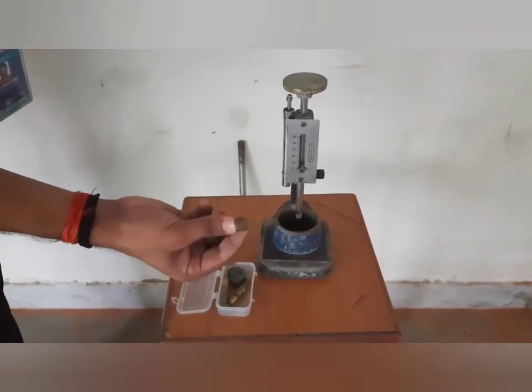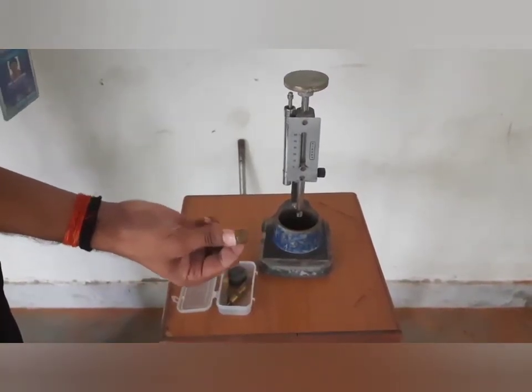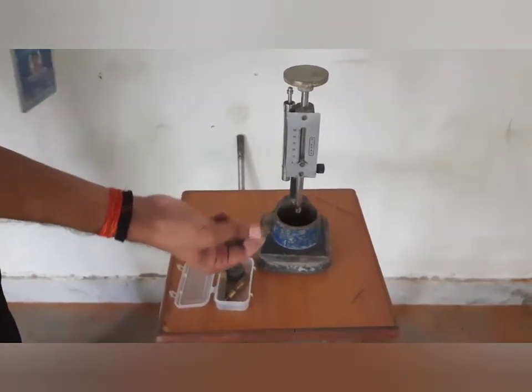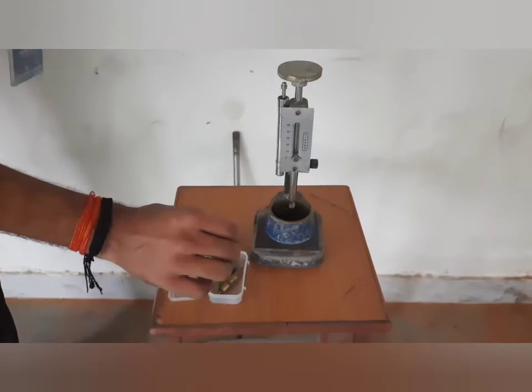Then, second needle has one mm square cross sectional area. This needle is used for calculating initial setting time.